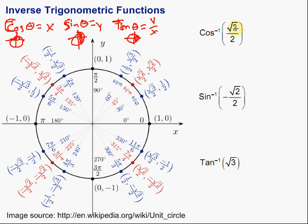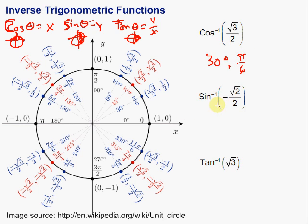Let's take a look at an example. The inverse Cosine of square root of 3 over 2. Remember that the Cosine is the x value. A way to remember which is which: cosine comes before sine alphabetically, just as x comes before y. So for the Cosine, we're looking in the top two quadrants for the x-coordinate equal to square root of 3 over 2. The inverse Cosine of square root of 3 over 2 is 30 degrees, or π over 6.